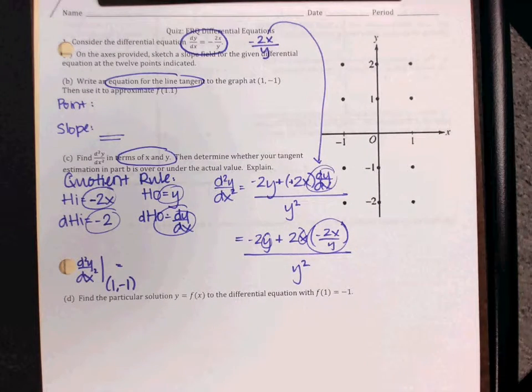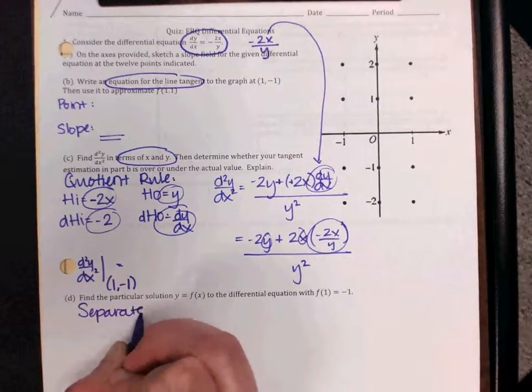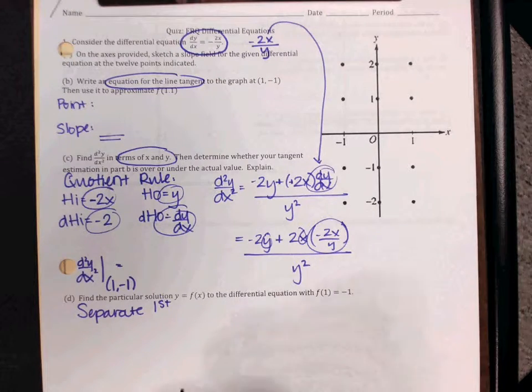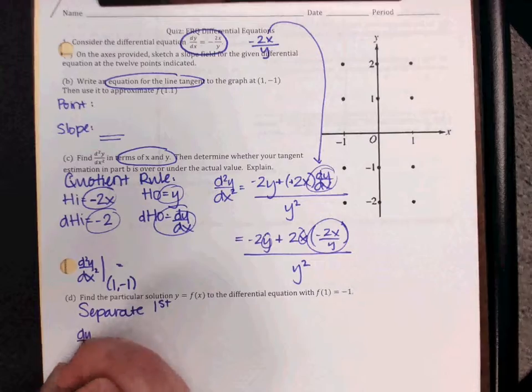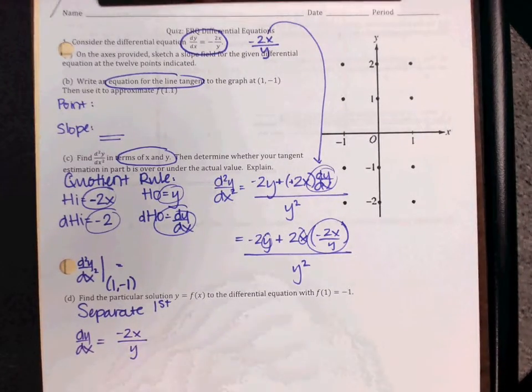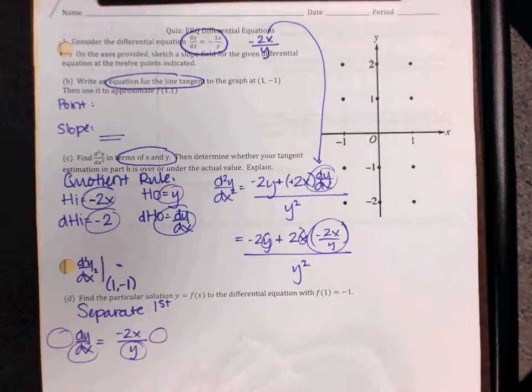Then for part d, it says to find the particular solution. Remember that you are going to need to separate first. So if my equation is dy dx equals negative 2x over y, remember that I'm going to rewrite that so the negative is kind of tucked into the top so that when I separate, my y is going to move over here, my dx is going to move over here.